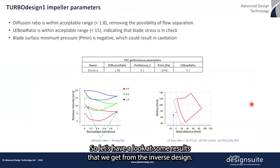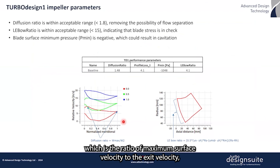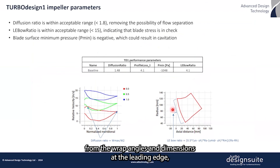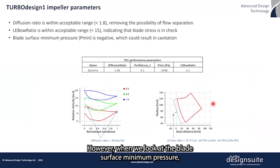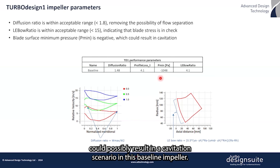Looking at some results from the inverse design: the impeller diffusion ratio, which is the ratio of maximum surface velocity to exit velocity, is sufficiently low to avoid flow separation. We also have the bow ratio, calculated from the wrap angles and dimensions at the leading edge — its low value means the blade is structurally safe. However, when we look at the blade surface minimum pressure, another key quantity that inverse design gives us, it's clear that this negative value could possibly result in a cavitation scenario in this baseline impeller.